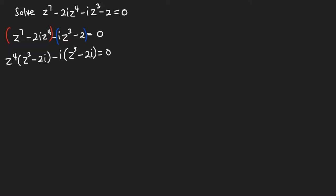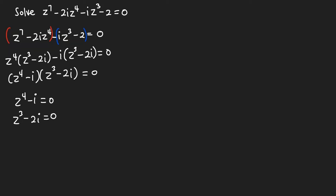From here I can write this equation as (z⁴ - i) multiplying (z³ - 2i) equals zero. What will happen is that you find the solution to these two expressions. First, z⁴ - i = 0, and second, z³ - 2i = 0. You are going to find the roots of these two equations, and that will be the solution to the equation you were given.